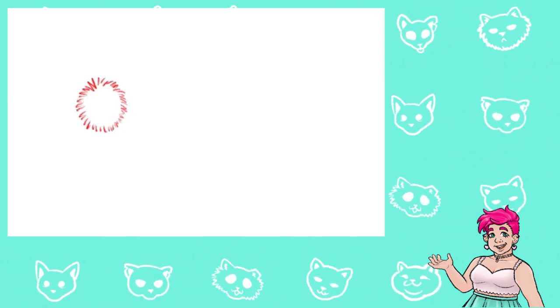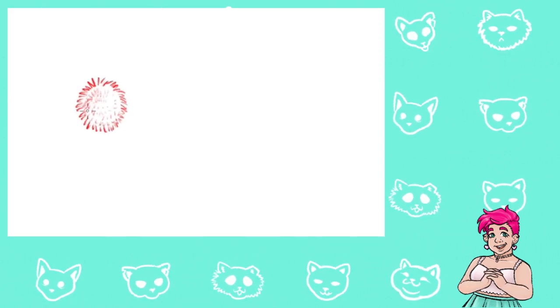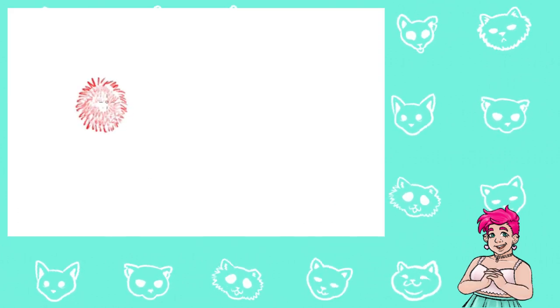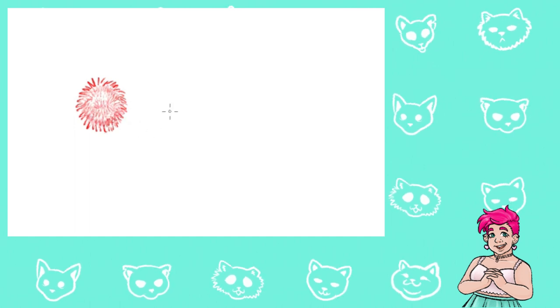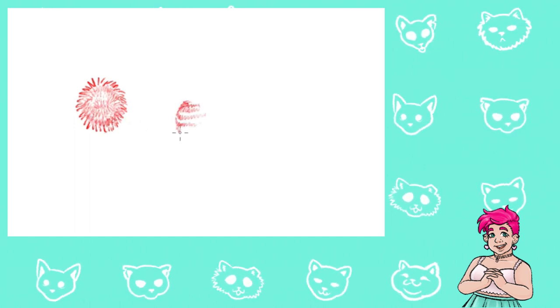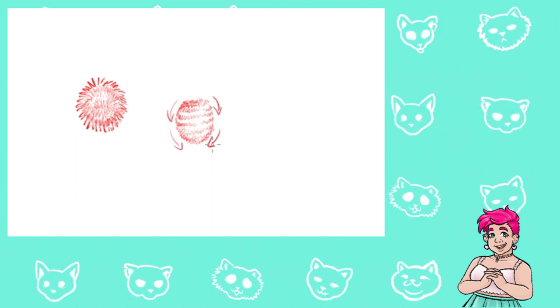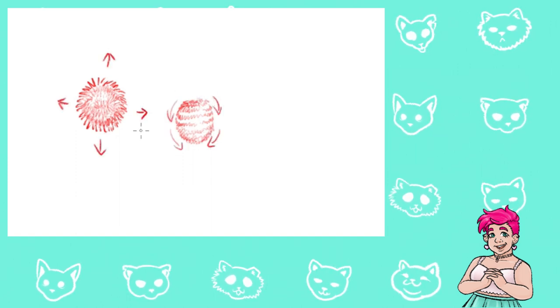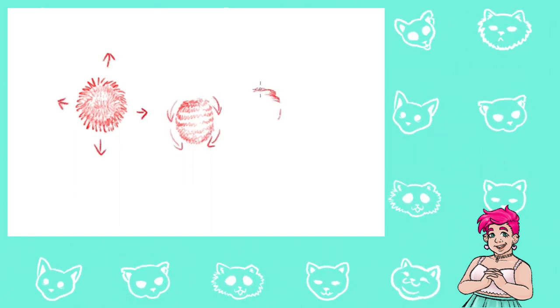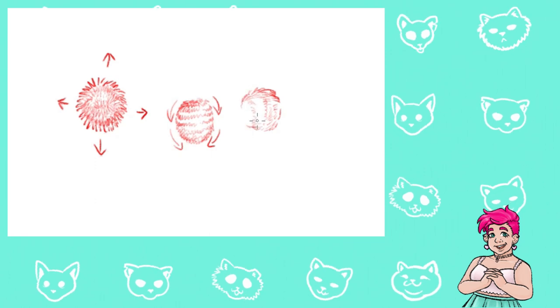Try to picture a pom-pom or a fuzzy ball. The fur is all the same length all over, but when you pull it one way or brush it in one direction, since it's being pulled from different distances, it doesn't all reach the same length in one direction.